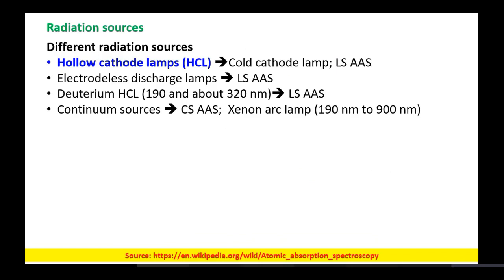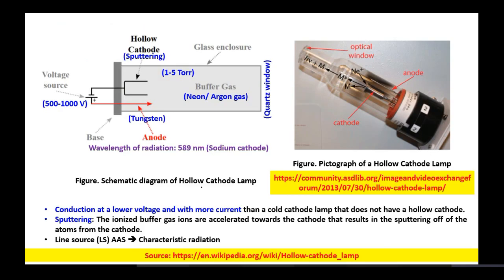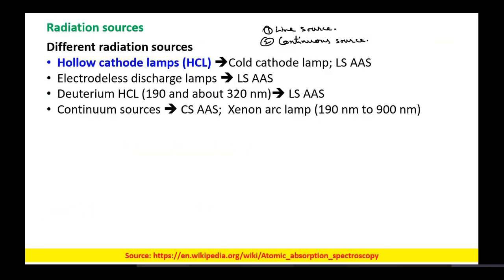Now, the radiation sources — there are different types. Broadly, radiation sources can be categorized into line sources and continuous sources.